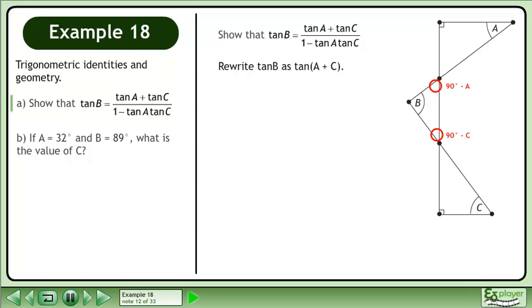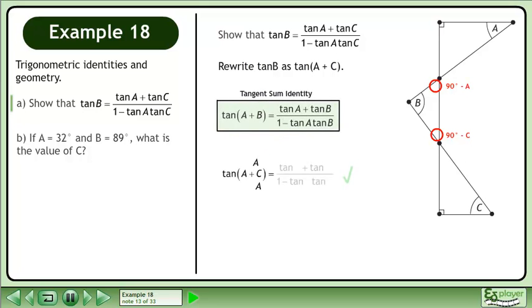Rewrite tanB as tan of A plus C. Use the tangent sum identity to get tanA plus C equals tanA plus tanC over 1 minus tanA tanC.